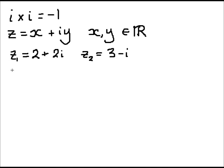And then I can do arithmetic with these. So, z₁ plus z₂ would simply be 2 plus 2i plus 3 minus i. And then I can just collect together the real parts, 2 plus 3 is 5, and the imaginary parts, 2i take away i is i.